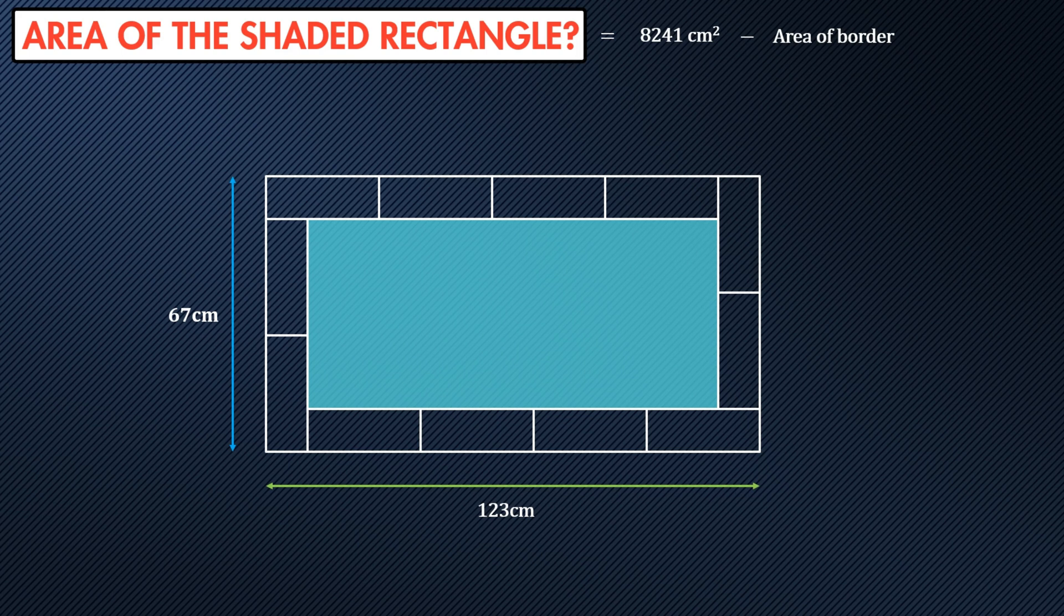Now to find the area of the border which is the 12 small rectangles. Because they're all identical, we have two standard lengths which we could call x and one we could call y. So the area of the small rectangle would be x times y and we can go ahead and label all of the sides.